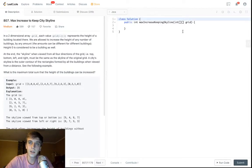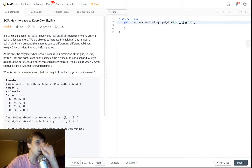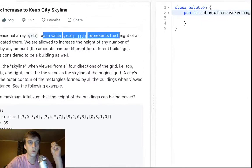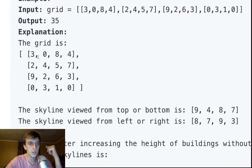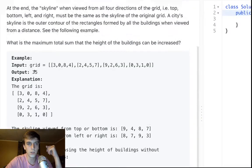You're given a two-dimensional grid array, so right here a 2D array. Each value of grid i of j represents the height of a building located there. So we have a grid and we have a bunch of buildings. Each individual index is a building, so these are all buildings, the 3, the 0, the 8, the 4.